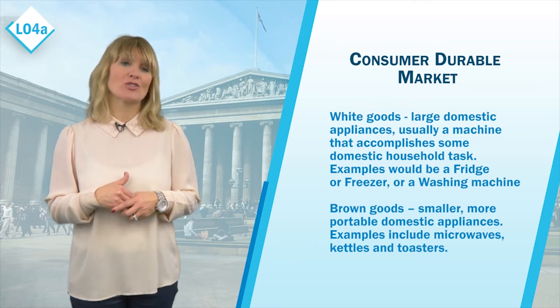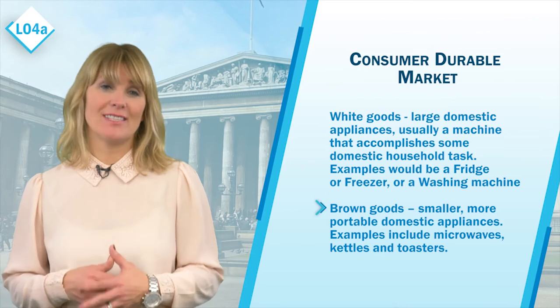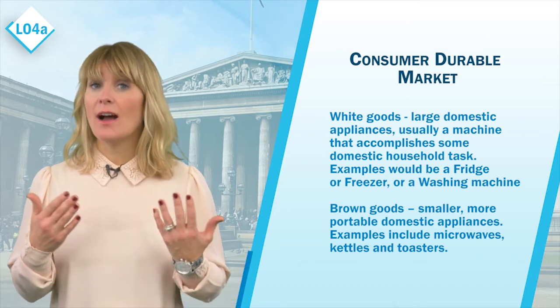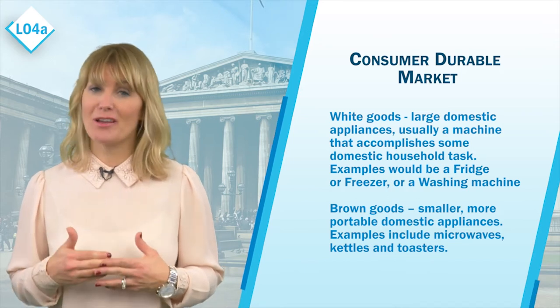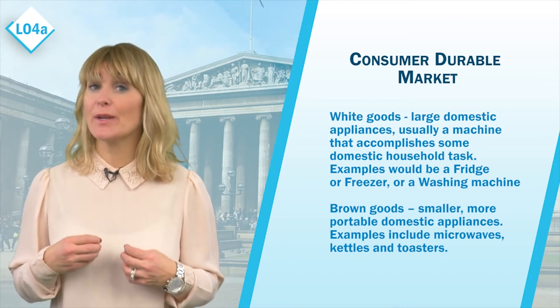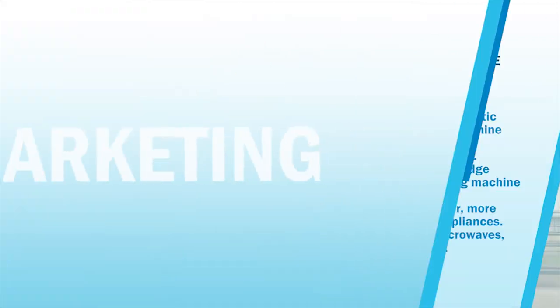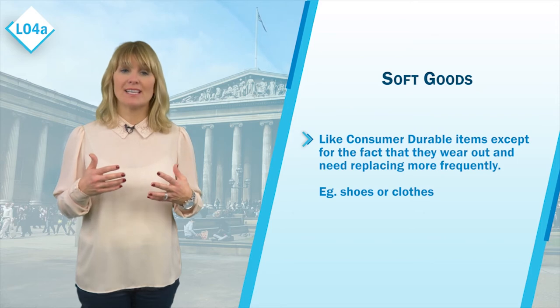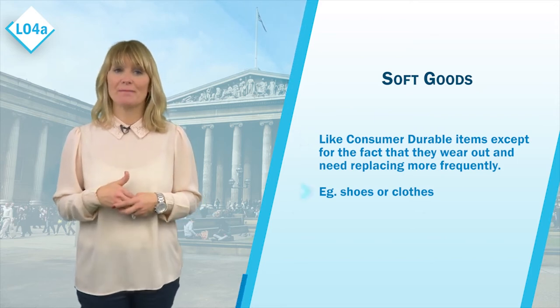These items are durable as they are so infrequently purchased by consumers, and when purchased they represent a much larger expense than FMCGs. Brown goods are similar to white goods in that they generally are used to accomplish a household task, but they differ in that they are smaller and more portable domestic appliances — examples include microwaves, kettles, and toasters. These items are also infrequently purchased but carry a high margin for sellers. Soft goods are much like consumer durable items except they wear out and need replacing more frequently — examples being shoes or clothes. The final category, services, will be dealt with in more detail in a later learning objective.